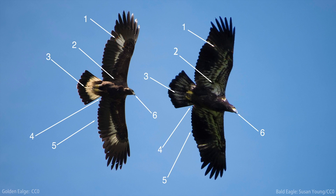Point number two is the white armpits. Bald eagles generally — immature, juvenile bald eagles — have more white in the quote-unquote armpits than golden eagles do. You will rarely see white in the armpit of the golden eagle. There are other words for these feathers, but let's just call it the armpits for simplicity's sake.